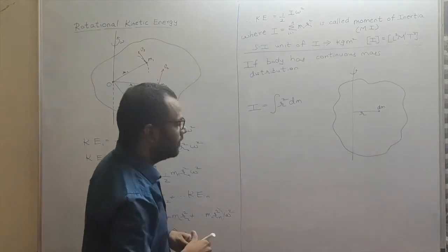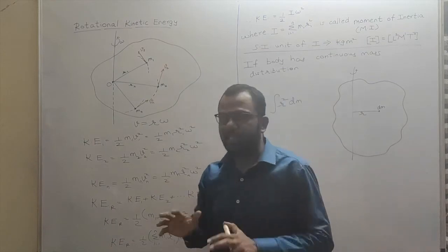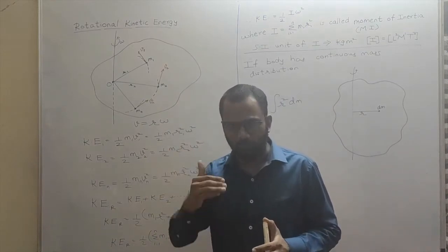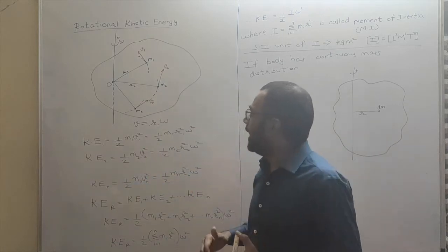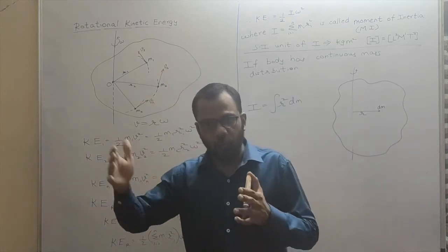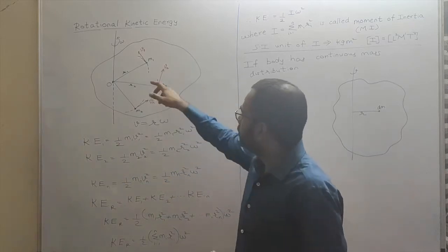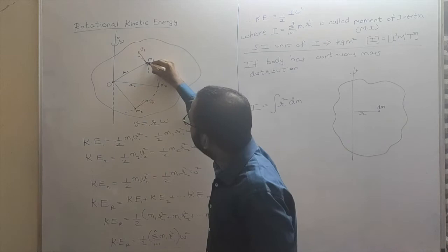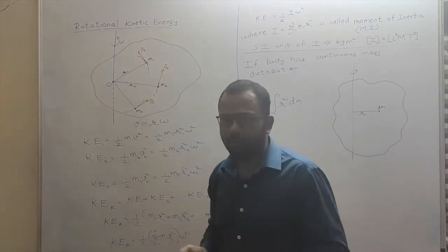Now this body is made up of a large number of particles. Let us say the body is made up of n particles: 1, 2, 3, 4, ... n. The masses of the particles are m1, m2, ... mn respectively. Suppose this is m1, this is m2, m3, m4, and so on, and this is mn.